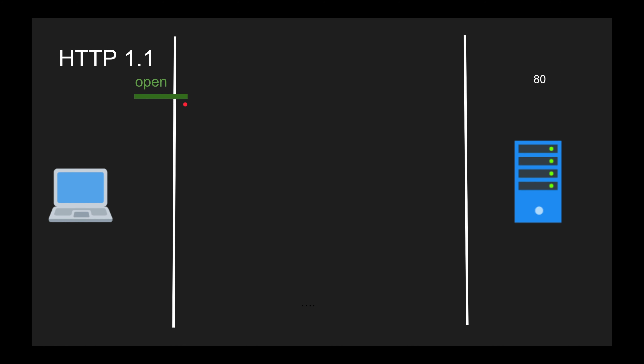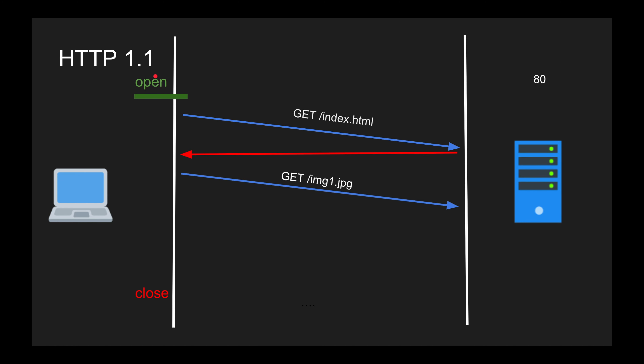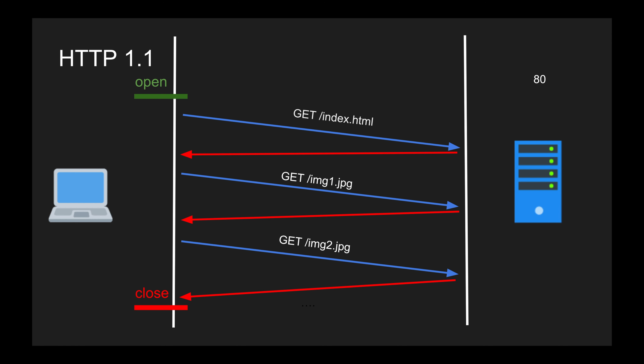In HTTP 1.1, we leave the connection open. There's a keep-alive header — and by default in HTTP 1.1 the connection stays open. So now you open the connection, send the first GET request, receive a response, send another GET request, receive the response, send another, and finally close it optionally. That's how HTTP 1.1 works, and having a running TCP connection to reuse over and over became very efficient.